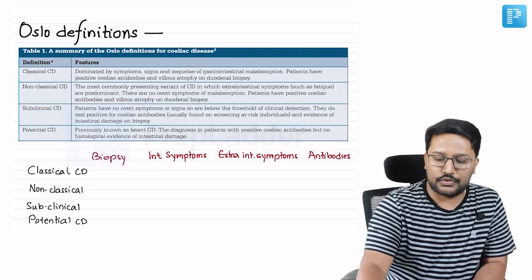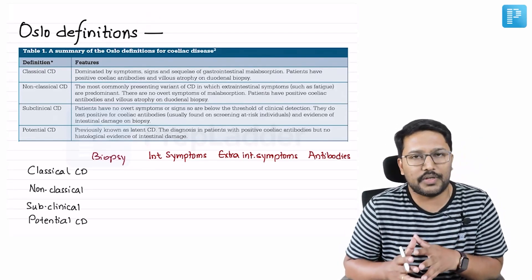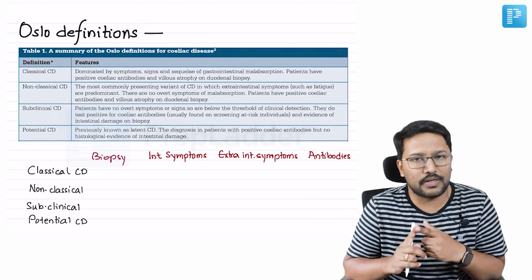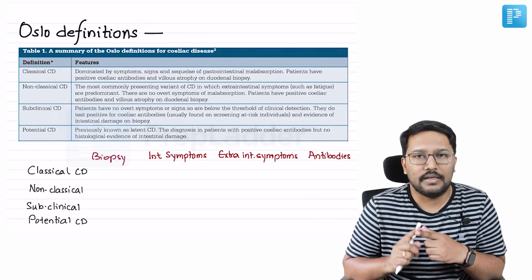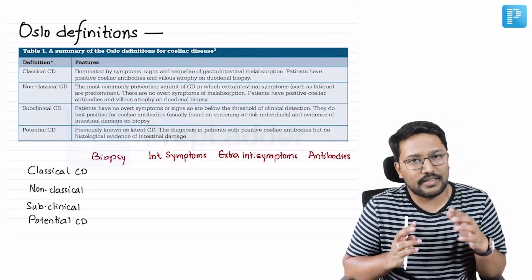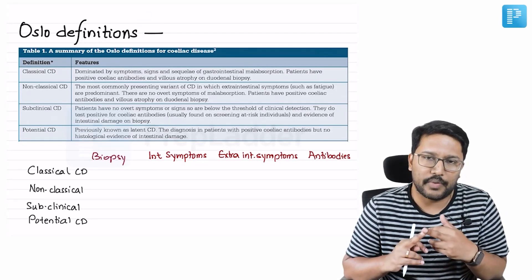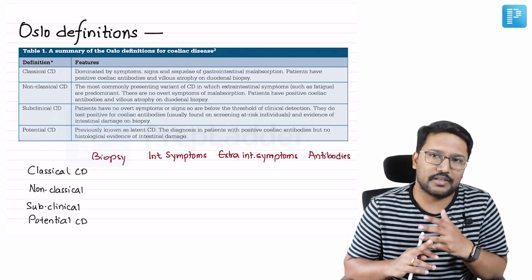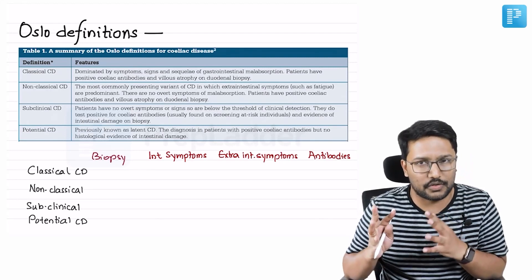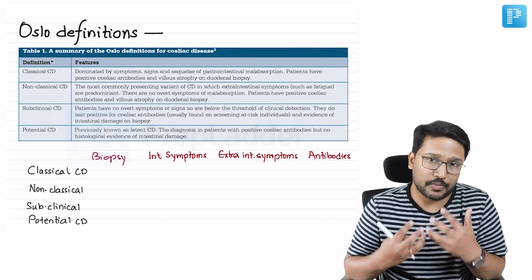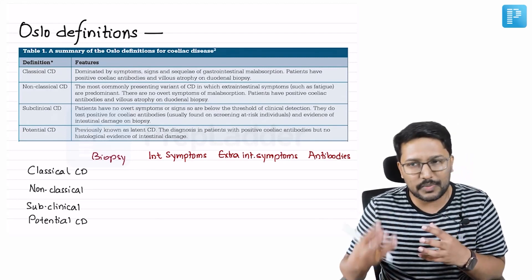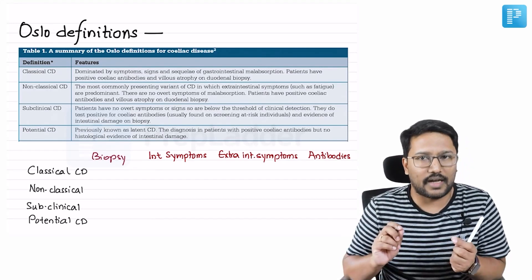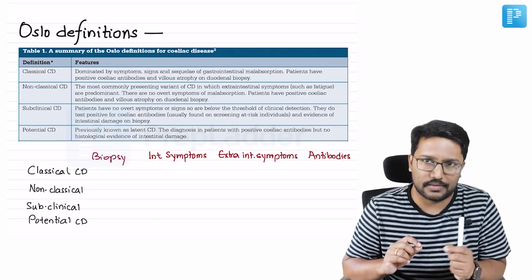Coming to the Oslo definitions, we are looking at three parameters. Parameter one: whether symptoms are present, and if so, whether they are intestinal or extra-intestinal. Parameter two: serology — are antibodies present? Parameter three: histopathology — whether histopathological changes are present.